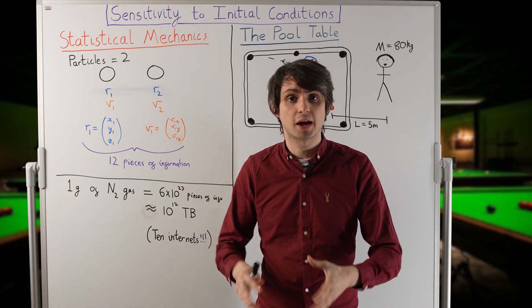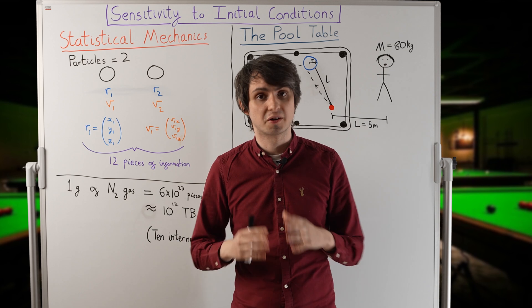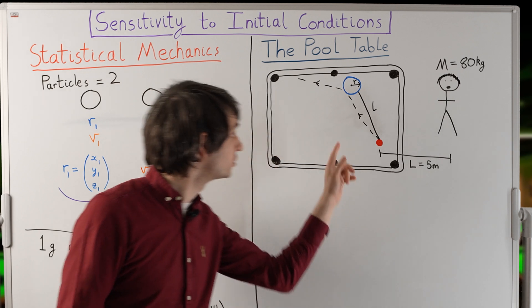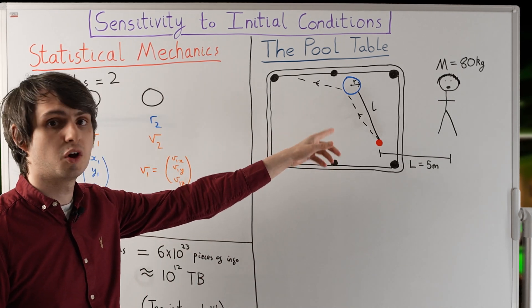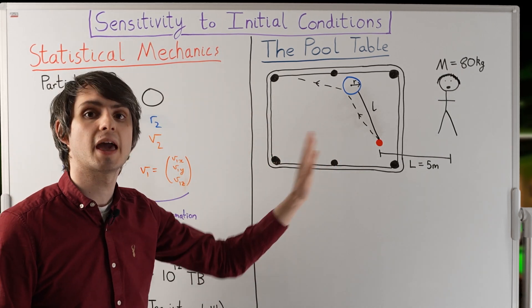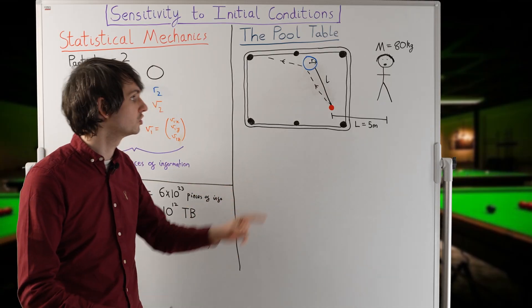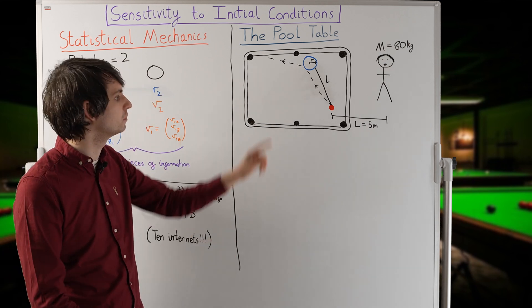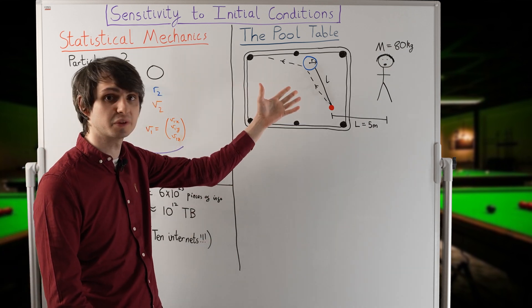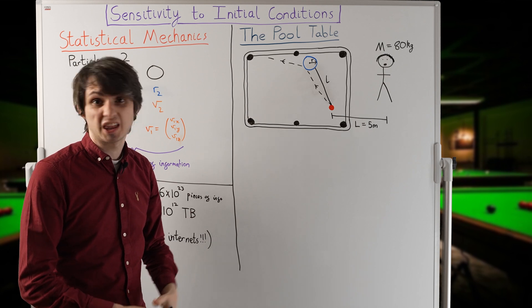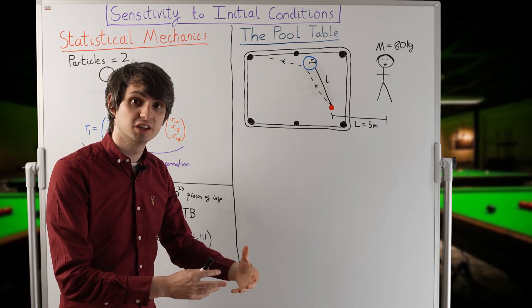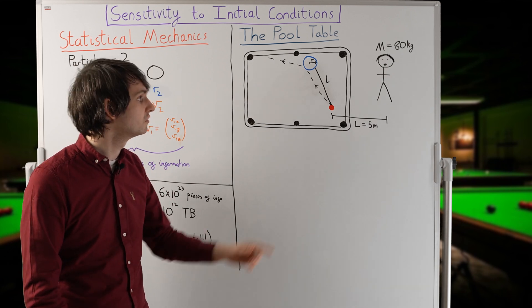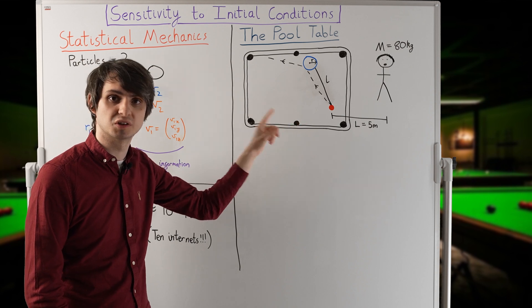We're going to demonstrate just how sensitive systems are to their initial conditions with a little calculation. Let's suppose that we have a pool table, with some billiard balls bouncing around on its frictionless surface, in an otherwise empty room. If we had perfect knowledge of this system, we could, in principle, use Newton's laws to predict exactly how the balls on the table will collide with each other at every point in the future. In any real situation, we don't have perfect knowledge. But how much will that really affect our predictions? In other words, how sensitive is this system to its precise initial conditions?